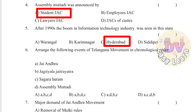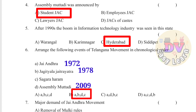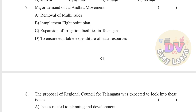Question 6: Arrange the following events of the Telangana Movement in chronological order — Correct order: A, B, D, C. Question 6: Jai Andhra. Question 7: Major demand of Jai Andhra movement — Answer: Removal of Mulki Rules.